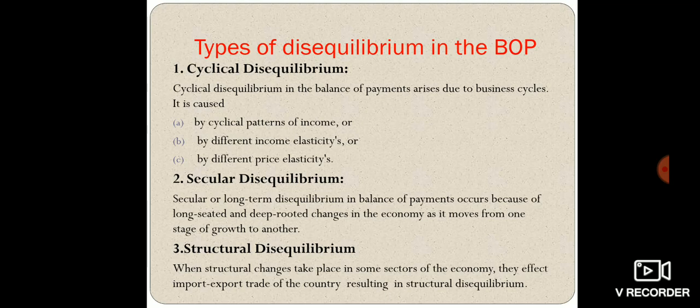So either a deficit or a surplus is called disequilibrium. Now let's look at the types of disequilibrium. First, cyclical disequilibrium: cyclical disequilibrium in the balance of payment arises due to business cycles — the growth stage, the boom stage, then contraction and depression stages. These cyclical patterns of income and different income elasticities and price elasticities affect the balance of payment disequilibrium.